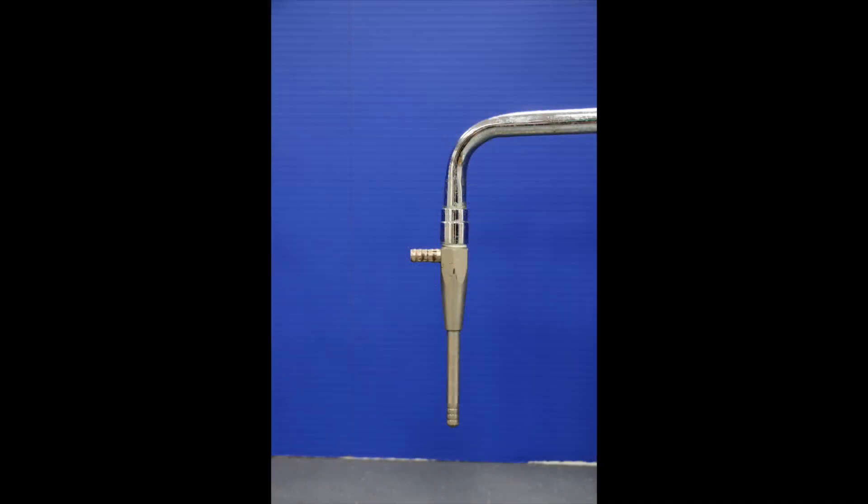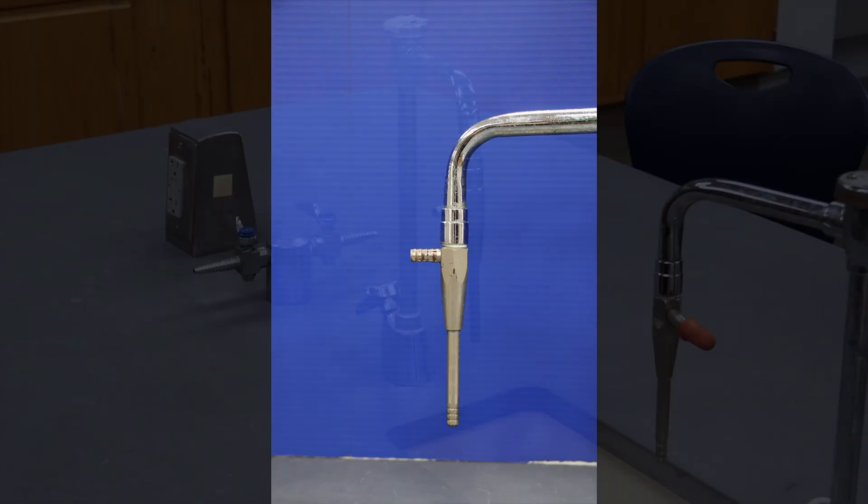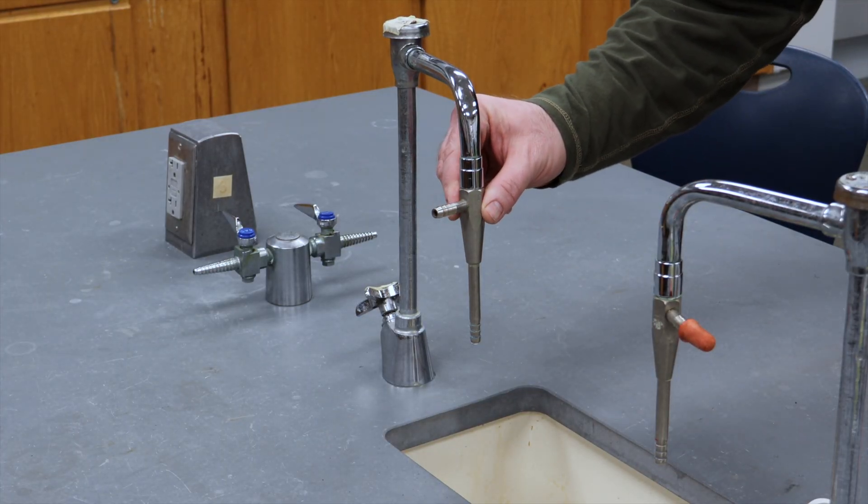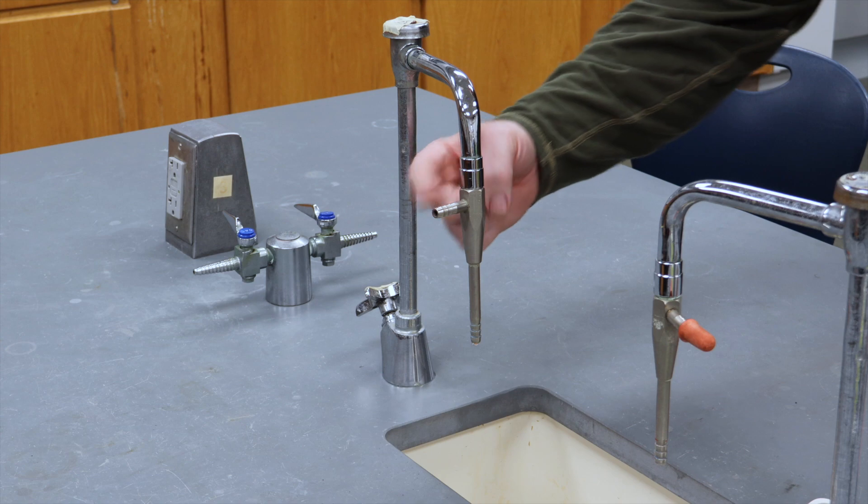In our labs, our source of vacuum is a water aspirator attached to a faucet in the lab benches. When you turn the faucet on, water rushes through the pipes and is constricted in the neck of the aspirator.